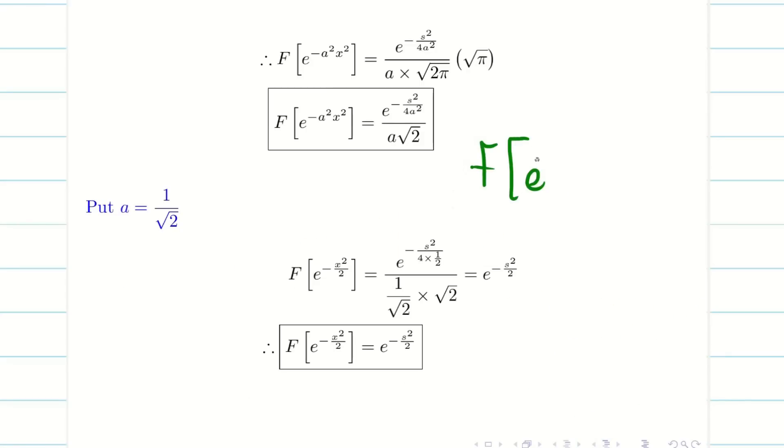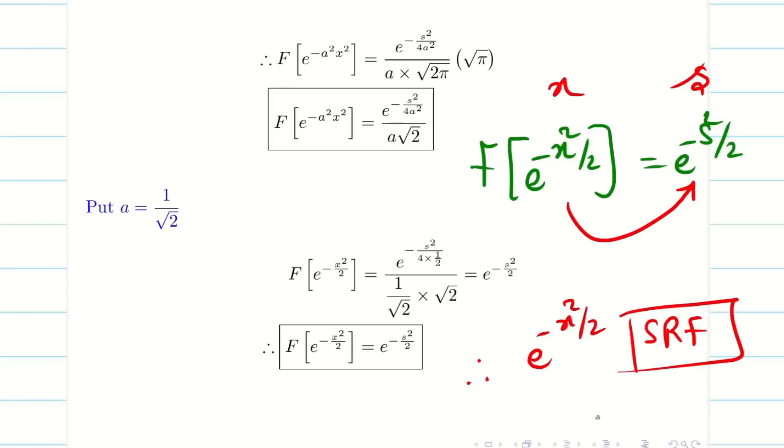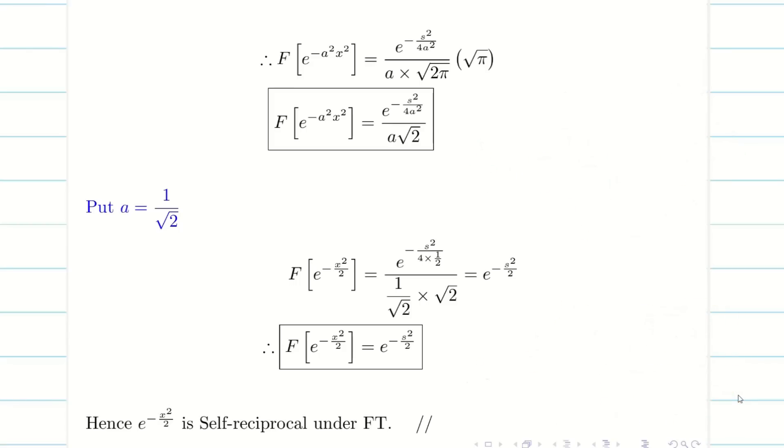Therefore F of e to the minus x squared by 2 is e to the minus s squared by 2. My input and my output differ only by x and s. So we conclude that e to the minus x squared by 2 is an SRF. What is SRF, students? Self-reciprocal function under Fourier transform. Hence the proof.